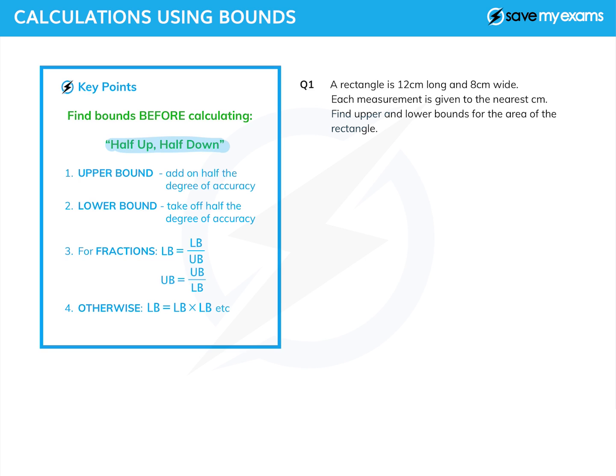Your upper bound: you add on half the degree of accuracy. And for the lower bound, you take off half the degree of accuracy. And then comes the calculation bit.